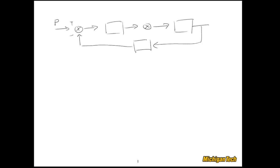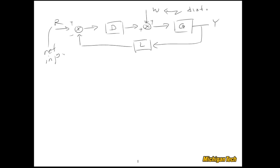I'll put in some letters: I'll call this one D — maybe that's our controller — G is our plant, our output is Y, and in the feedback path we have some other transfer function L. We have a couple of different inputs: R, which is my reference input, and W, which is the disturbance input.